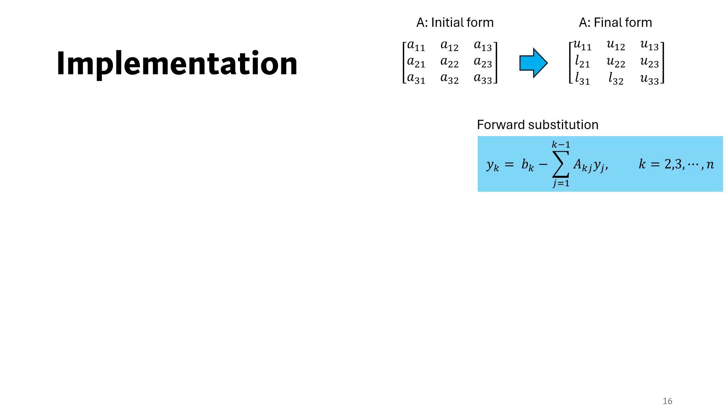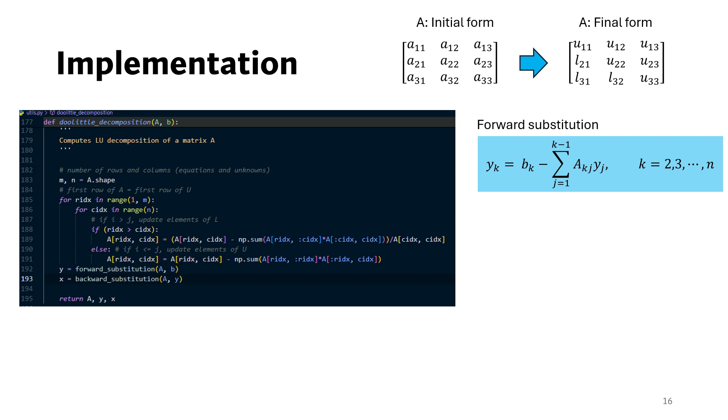Let's now see how we implement this decomposition in a Python code. For that, we write a function, doolittle_decomposition, which takes the coefficient matrix A and the output vector B as inputs. Then the first row of A is the same as the first row of U matrix, so we start from the second row.